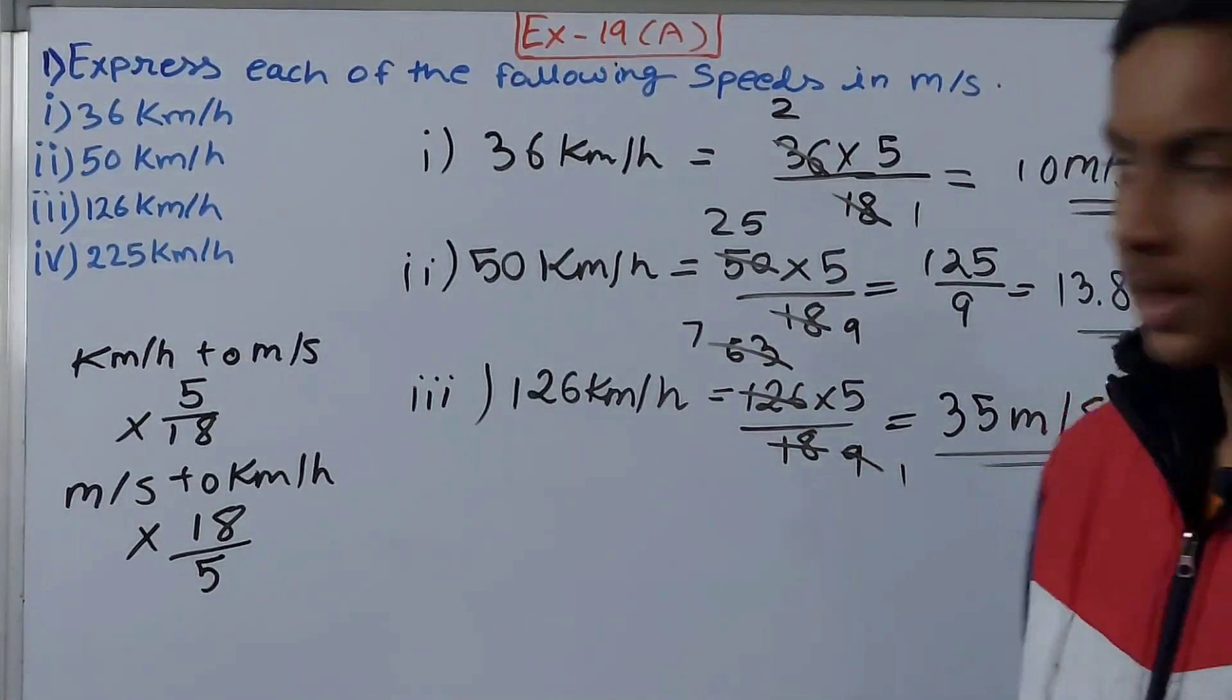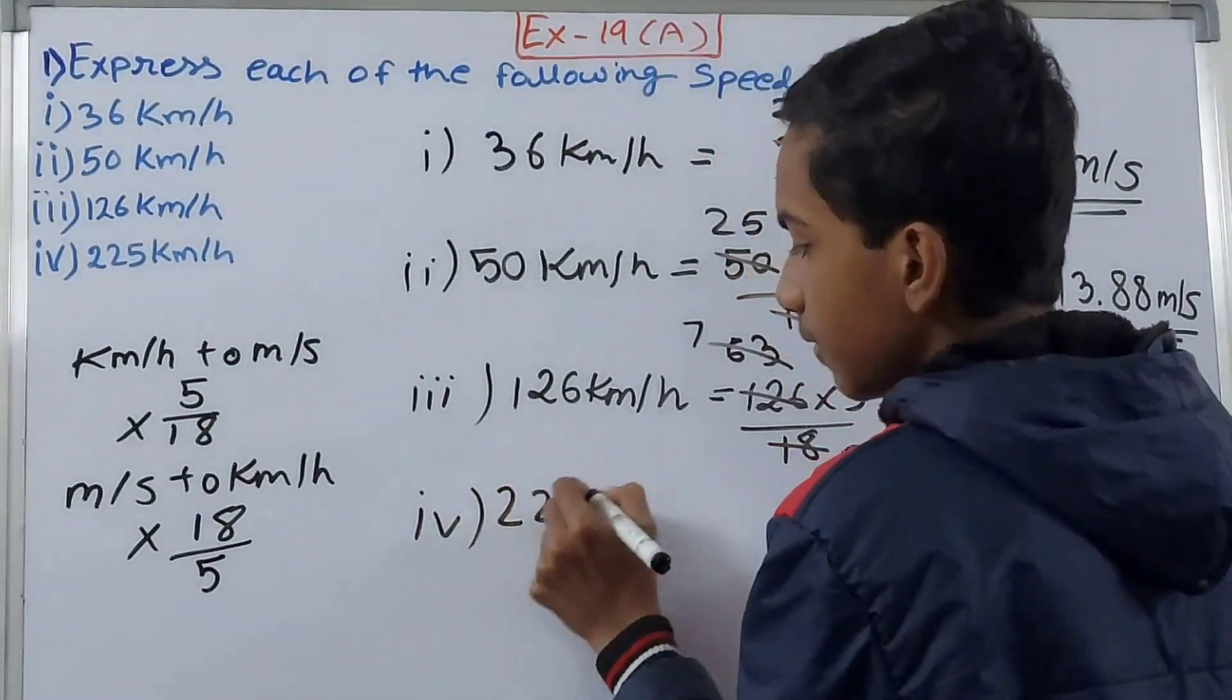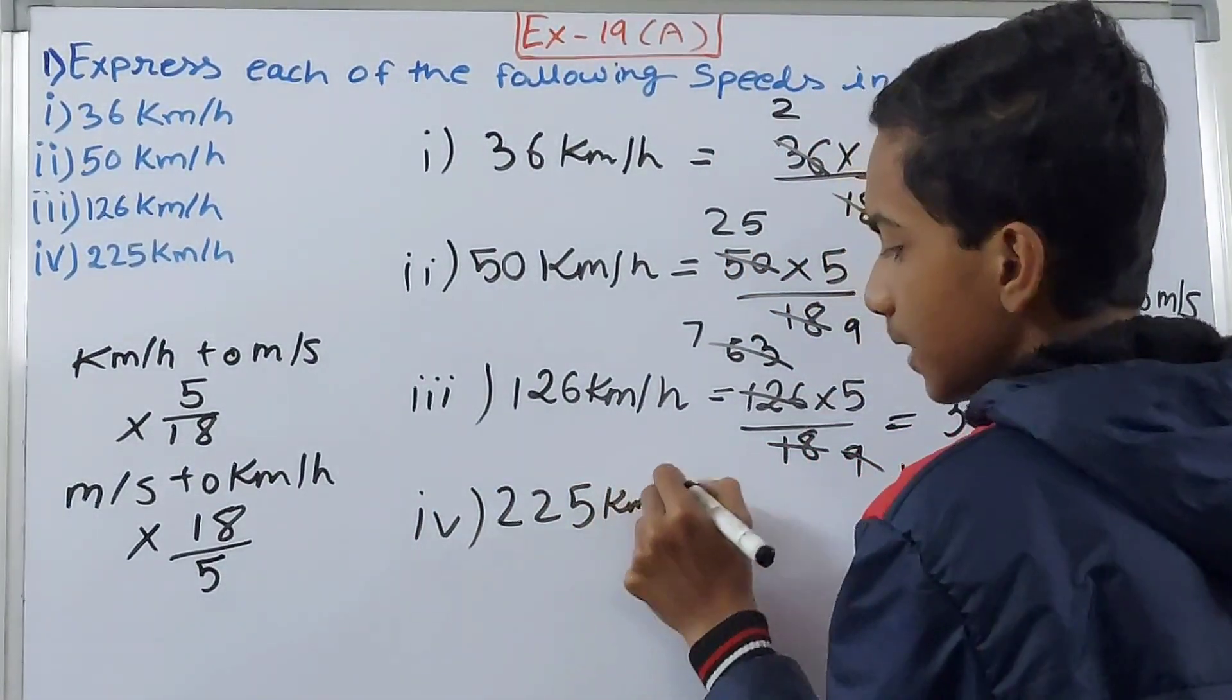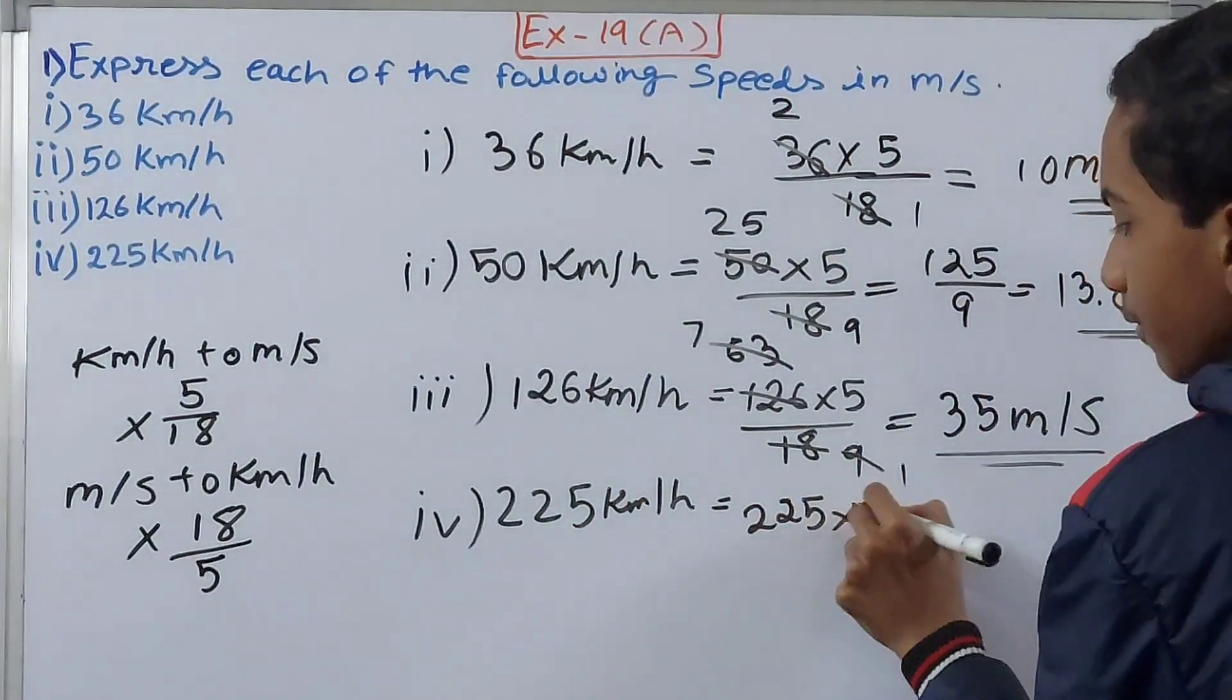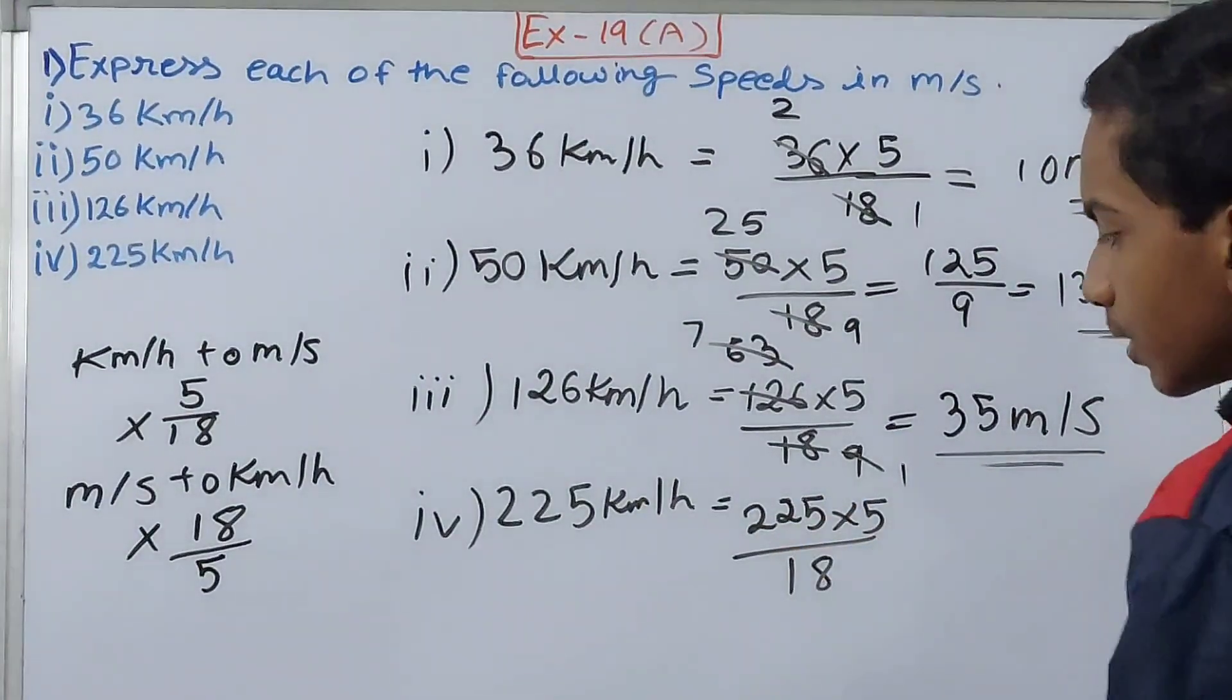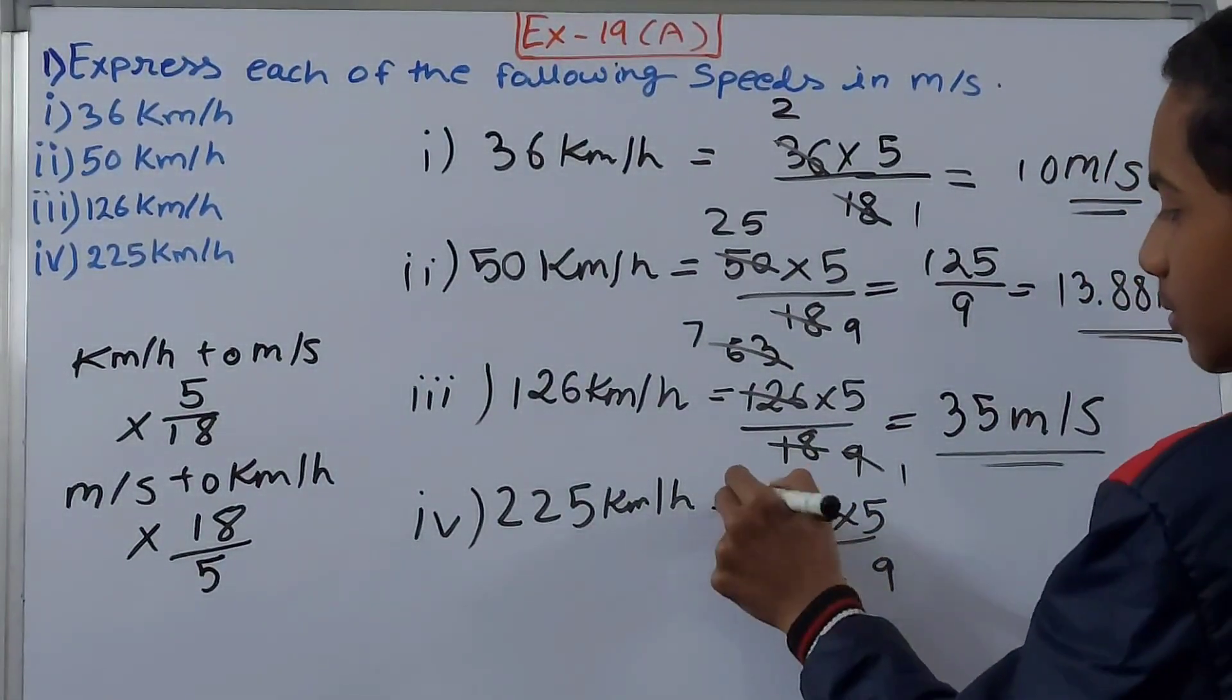This becomes the answer for the third one. Last up we've got 225 kilometers per hour. Same thing, 225 into 5 by 18.